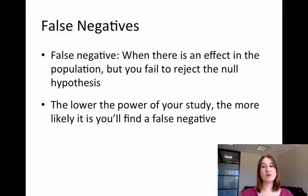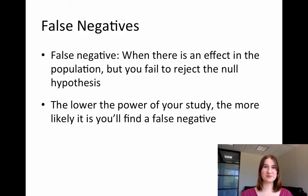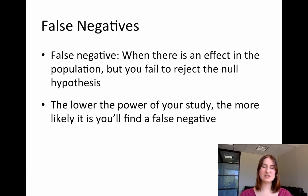The lower the power of my study, the more likely it is that I find a false negative, because power tells me how likely it is that I find an effect when the effect is really there. One minus my power is the percentage likelihood that I don't find an effect. So if I have 80% power, 80 studies will come back significant and 20 will be false negatives.